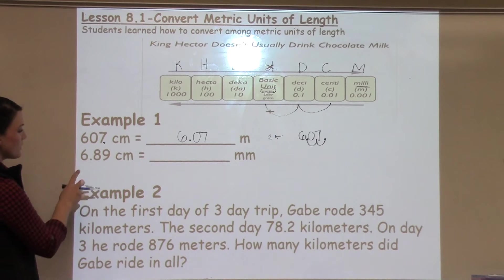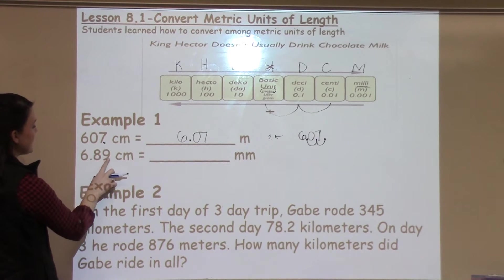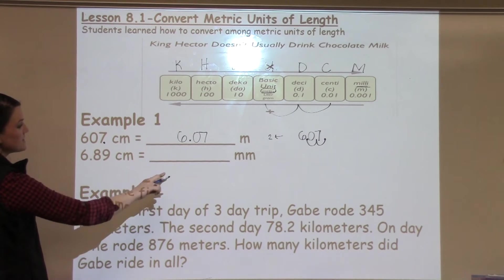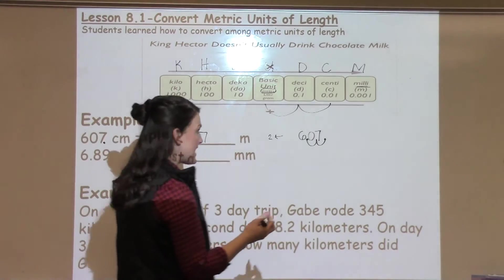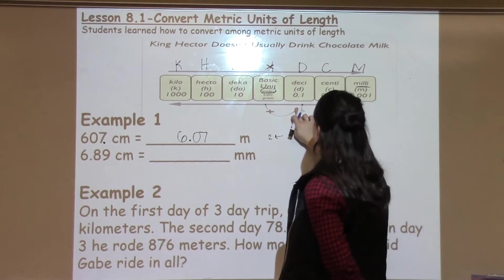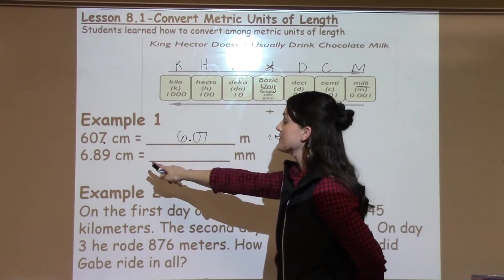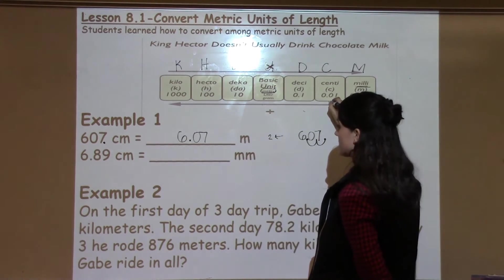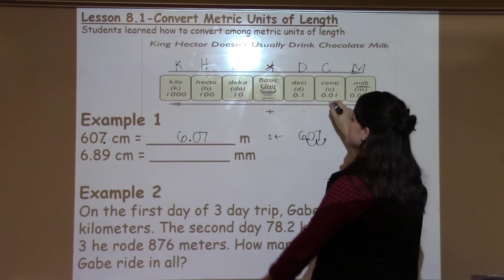So let's look at another example. Here I have 6.89 centimeters and I want to move to millimeters. So again, we start on the diagram with what I have a number for, and in this problem I again have a number for centimeters. So I'm going to start with centimeters and I'm going to move to millimeters.